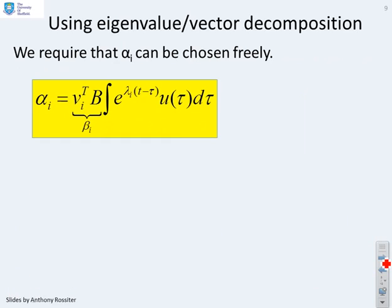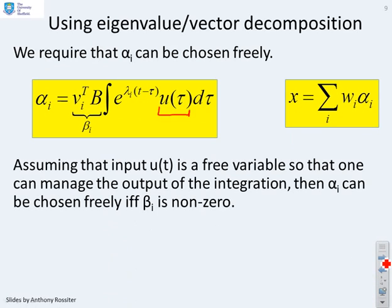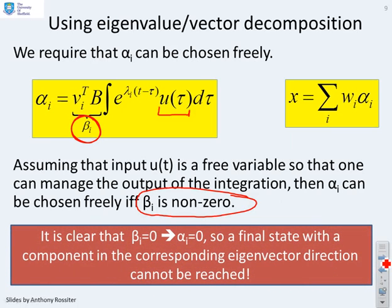So we require that αᵢ can be chosen freely. Well this is the definition of αᵢ. Now remember, u(t), or here u(τ), is actually your degree of freedom. So the bottom line is, you can choose this u(τ) however you want, and therefore in principle you can get αᵢ to be whatever you want it to be. But there is one exception. We have to assume that βᵢ is non-zero. You'll see there's a βᵢ term here. If that's zero, then αᵢ is always zero.